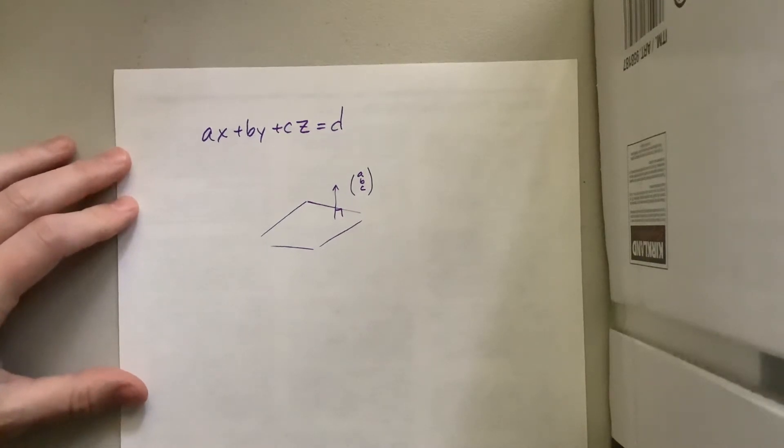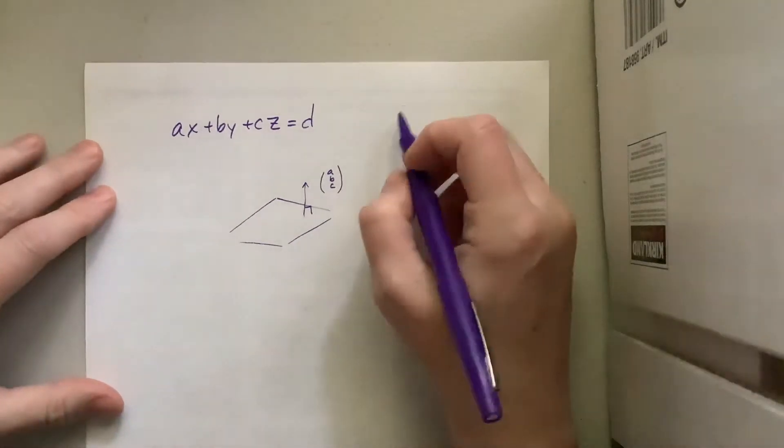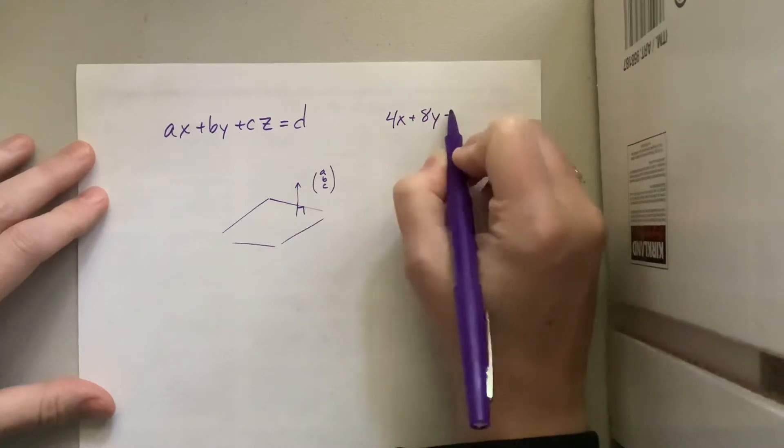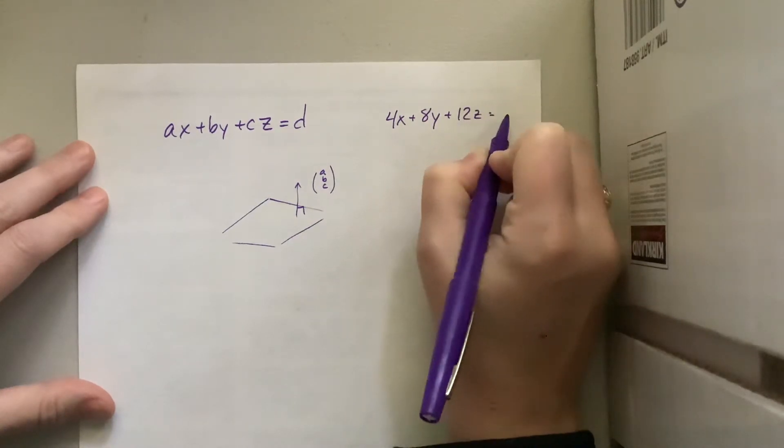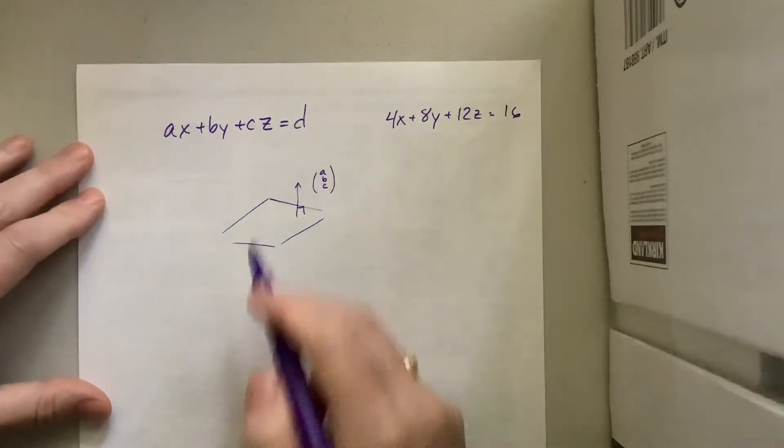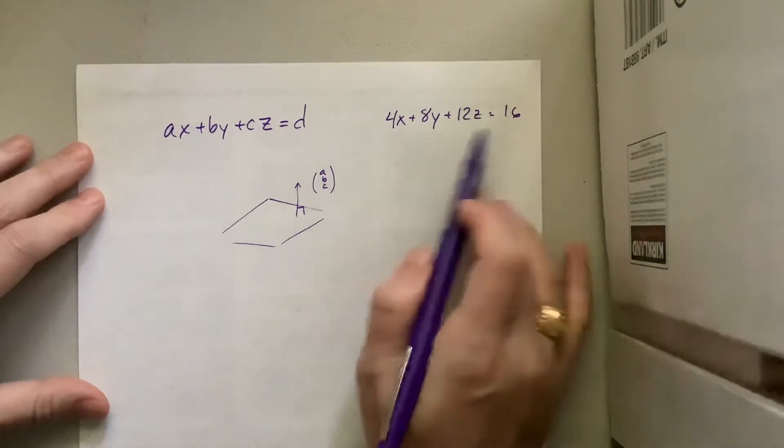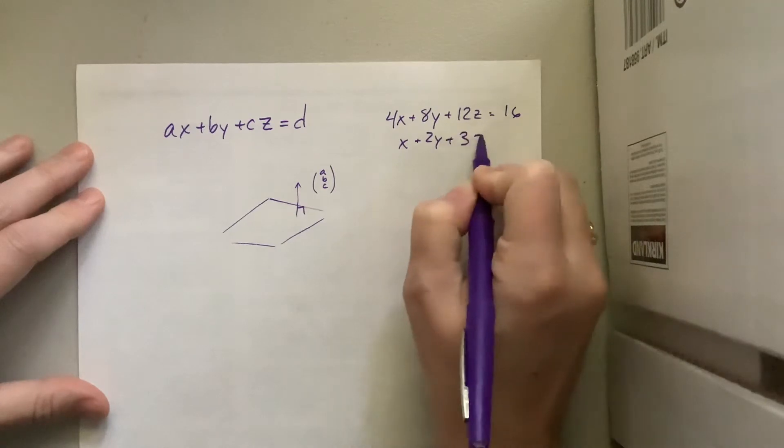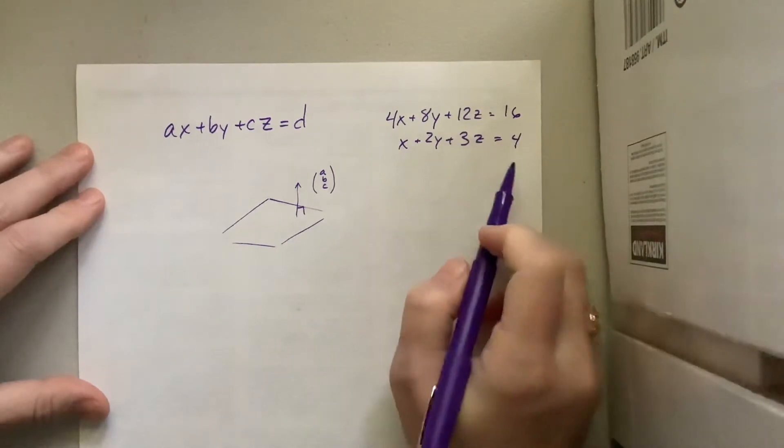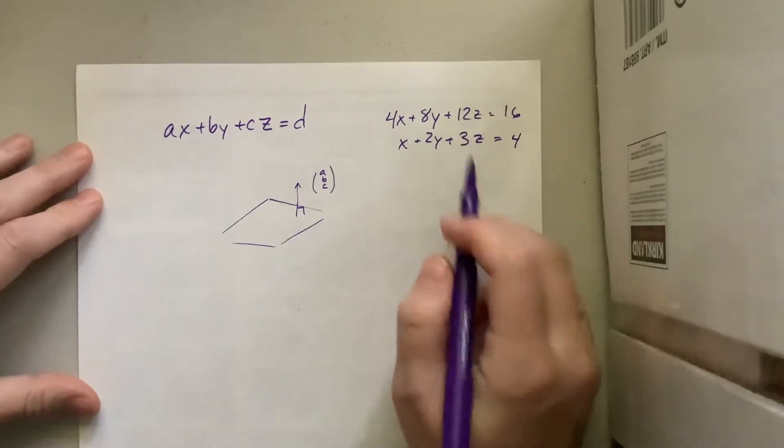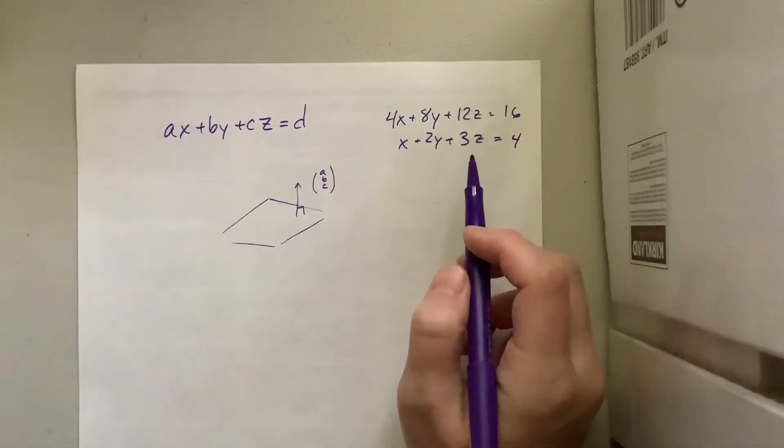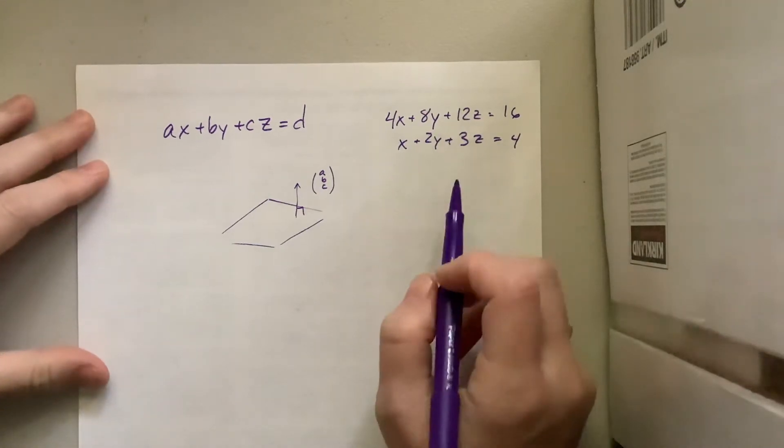Or you could have anything parallel to that, which is why sometimes instead of saying 4x plus 8y plus 12z equals 16 if that were our plane, I could divide through by 4 and say x plus 2y plus 3z equals 4 and that would be the same plane but a more simplified version.